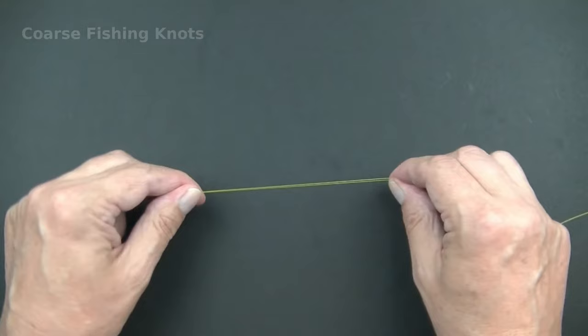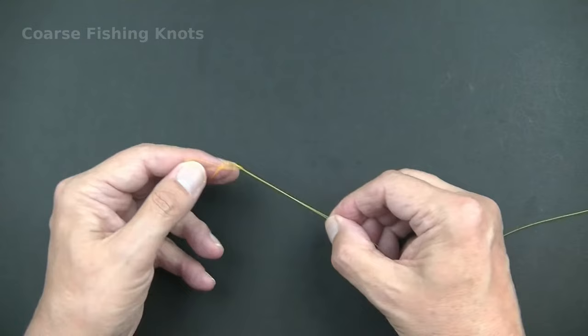Figure of Eight Loop Knot. This knot is one of the strongest knots for tying a loop in fishing line.